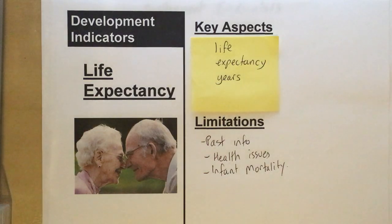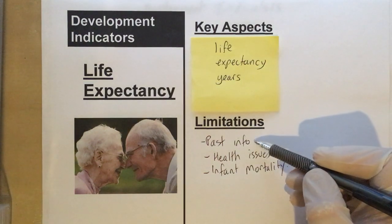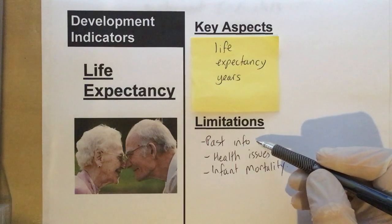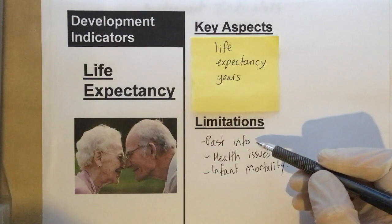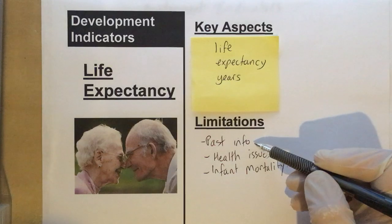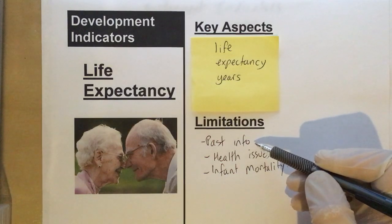Some of the problems with this are that it uses past information. The government makes an estimate and says, in the past we know X, Y and Z about the country. In the past, this influenced life expectancy for these reasons. So it's based on past information, and who's to say what that information will be in 70, 80, or 90 years' time.